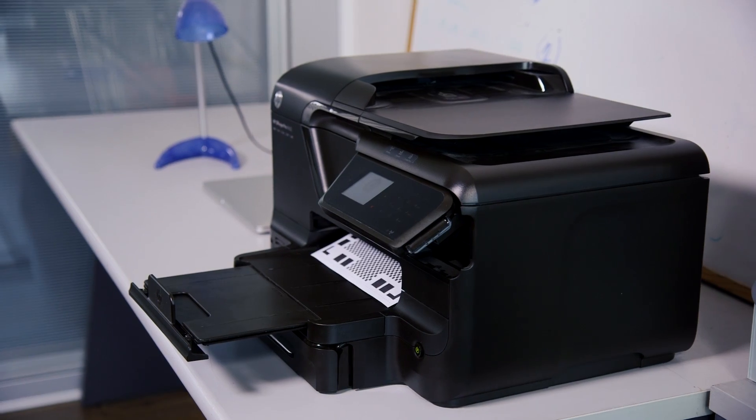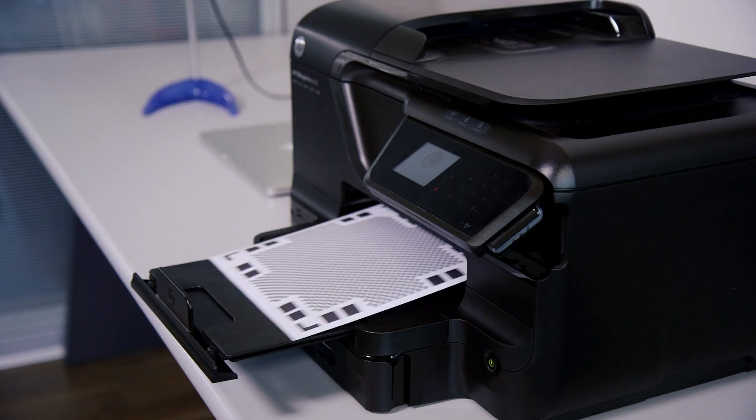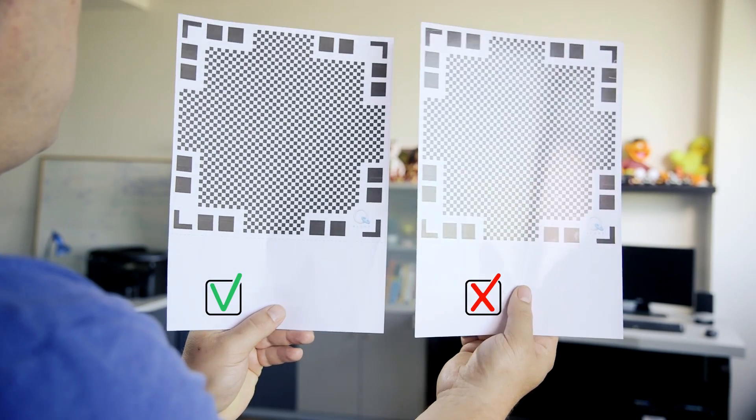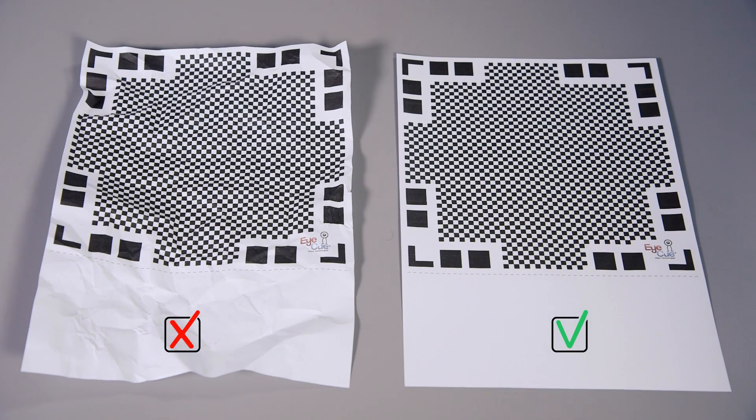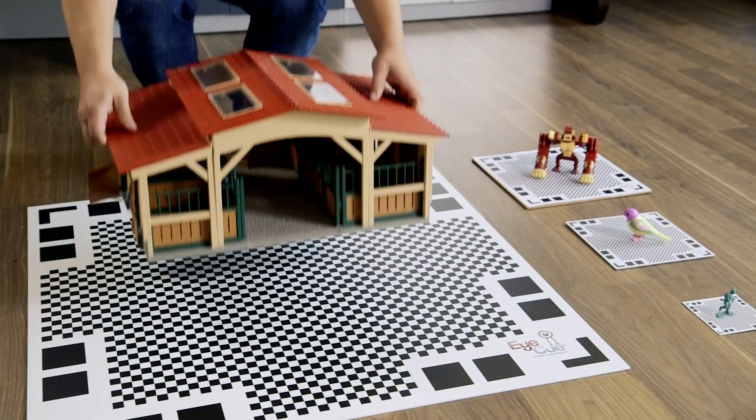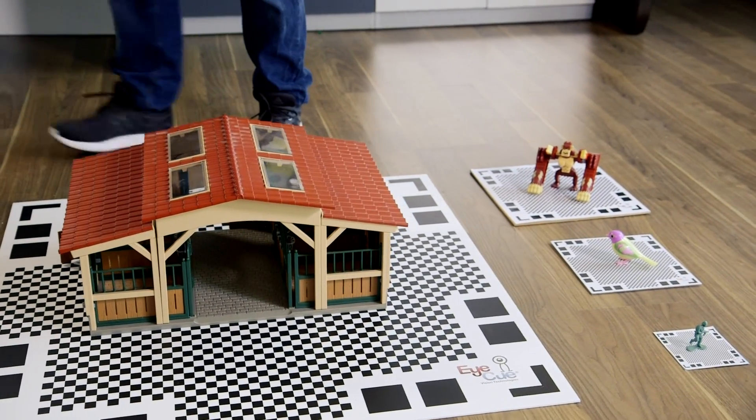It's very important to print the mat on non-glossy paper and to keep it flat when scanning. You can print the mat in different sizes depending on the size of the object you want to scan.